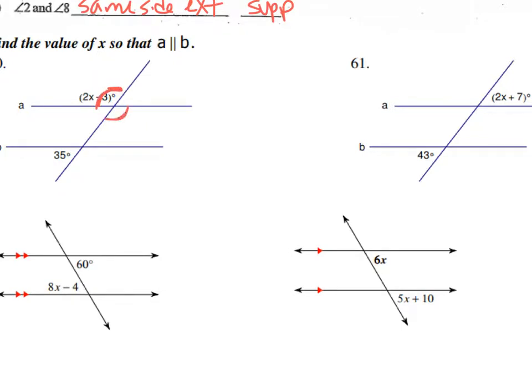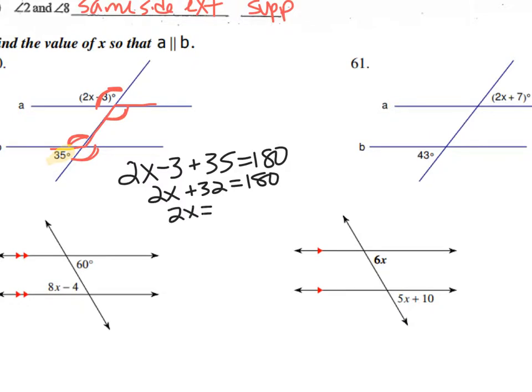I know these two are congruent from vertical angles. I draw my z, so now here are my other two congruent angles. So did I mark the other spot I have my given information, the 35? No. So that means 2x minus 3 isn't equal to 35. 2x minus 3 plus 35 equals 180. They're supplementary. So that gives me 2x plus 32 equals 180. 2x equals 148, so x equals 74.